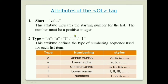The start value must be a positive integer. The type attribute defines the type of numbering sequence used for each list item. There are 5 types: capital A for upper alphabet, small a for lower alphabet, uppercase I for upper Roman numerals, lowercase i for lower Roman numerals, and 1 for the default numeric sequence — no need to specify 1 explicitly as it is the default.